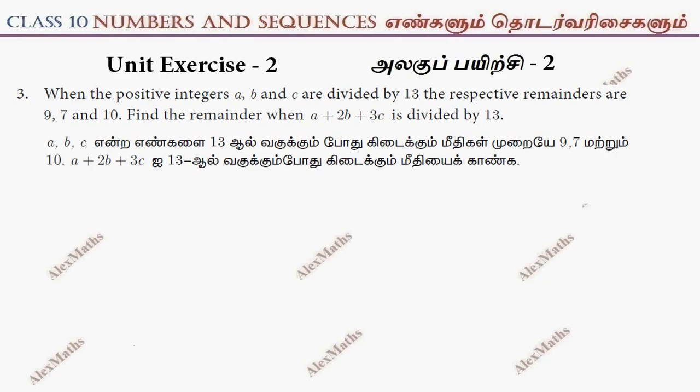Hi students, this is Alex here. Unit exercise 2, question number 3. When the positive integers A, B and C are divided by 13, their respective remainders are 9, 7 and 10.